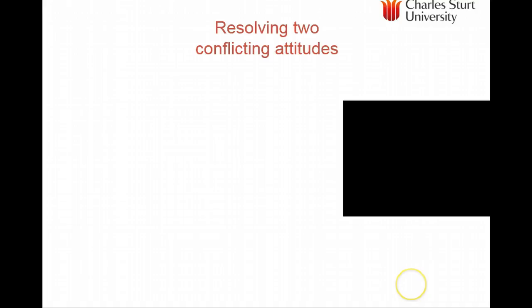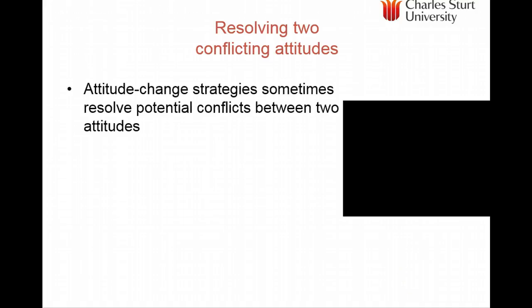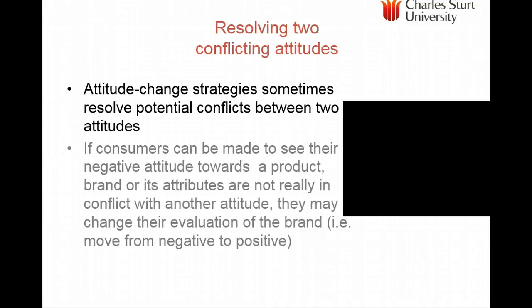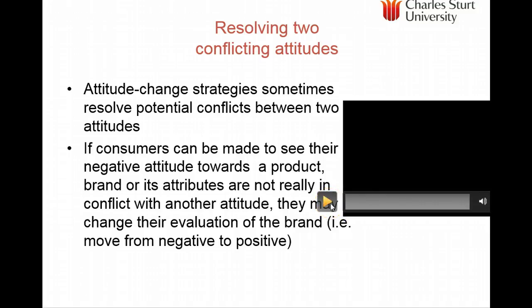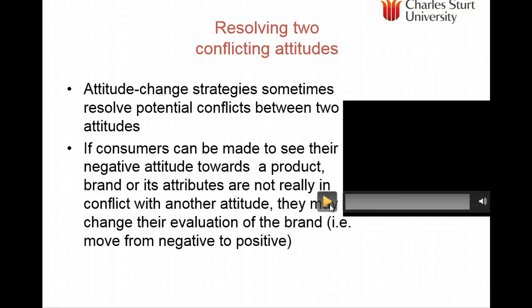People can have conflicting attitudes about an object, so attitude strategies sometimes need to resolve these conflicts. If consumers can be made to see that the negative attitude towards an object is not really in conflict with other attitudes, they may change their evaluation from negative to positive. Palmolive Dishwashing Liquid in the 1950s and 60s countered the strong attitude that dishwashing liquid was bad on your hands, while also acknowledging the positive attitude that it helps clean dishes — and the advertisement resolved these two conflicting attitudes.